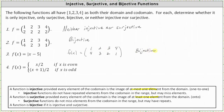Now let's write the two-line notation for number four, where f(x) equals x divided by two if x is even, and f(x) equals (x + 1) divided by two if x is odd. When x equals two, we have two divided by two, which is one. When x equals four, we have four divided by two, which is two. That takes care of the even values. For the odd values: when x equals one, we have two divided by two, which is one. When x equals three, we have three plus one equals four, and four divided by two is two.